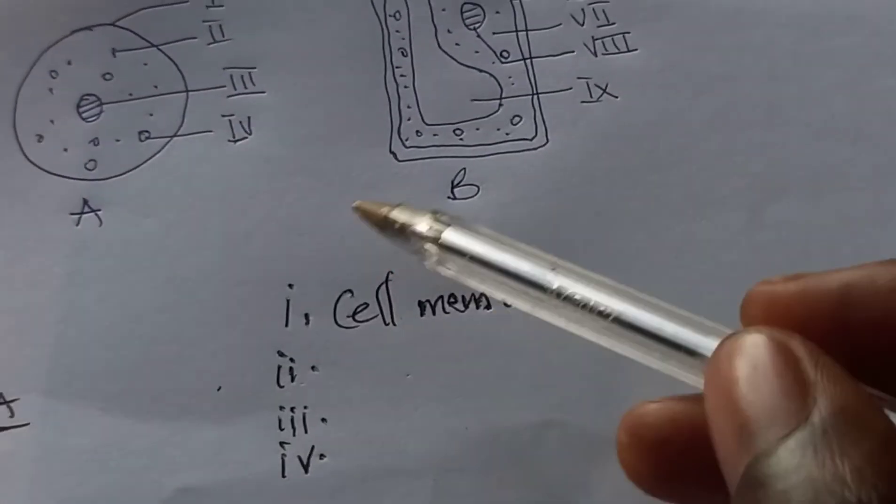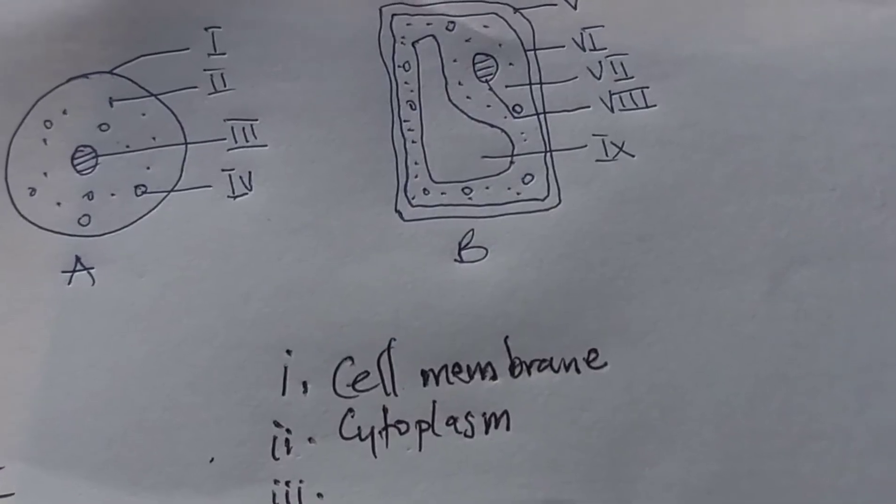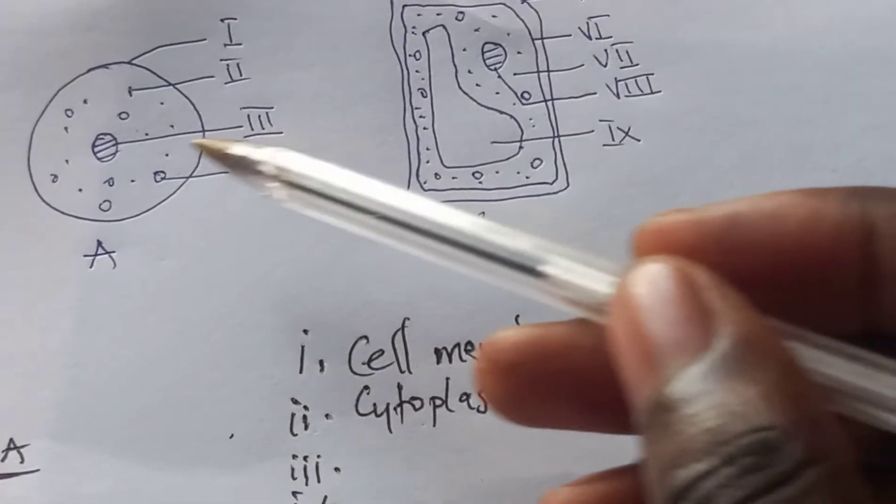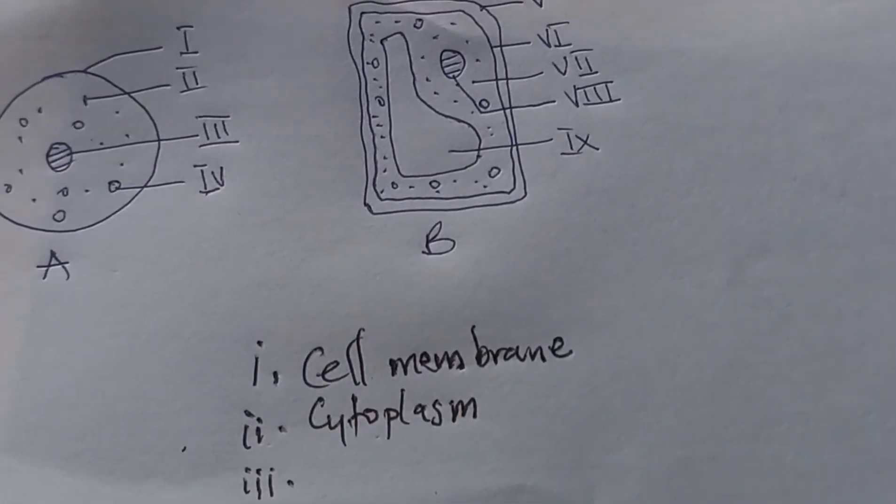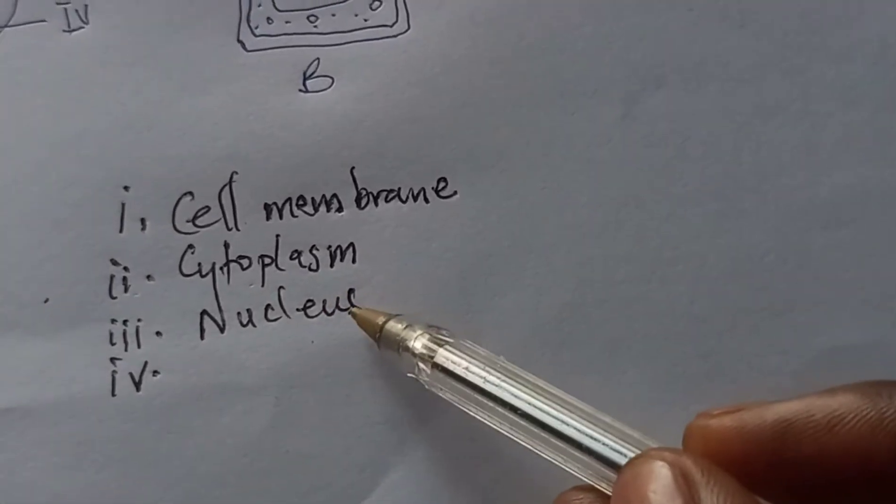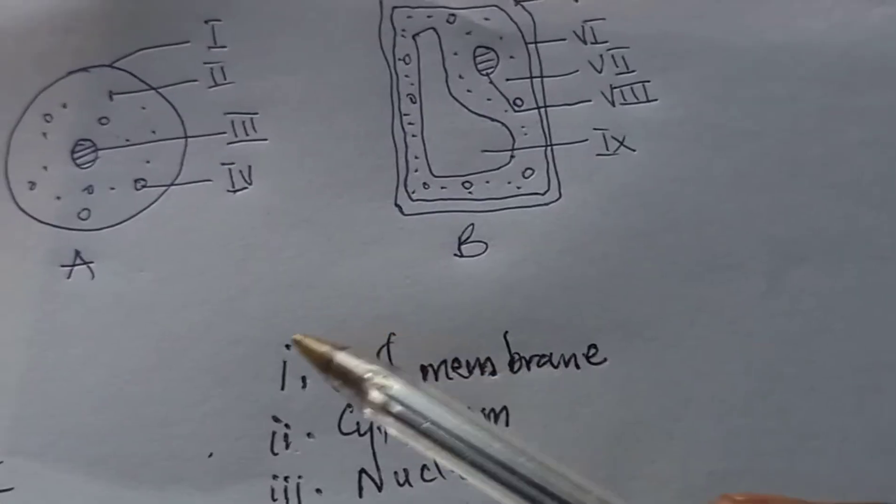II, of course as you can see here, is the cytoplasm. That's right. And then we have III, which is the nucleus - be mindful of the spelling, nucleus. And then IV.